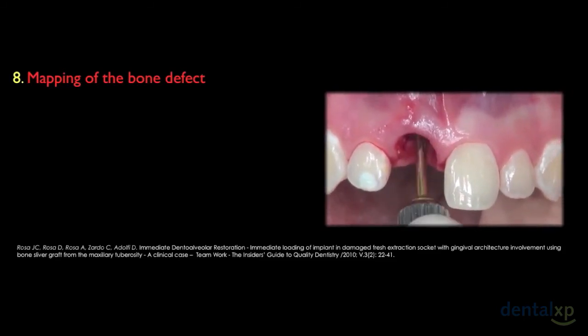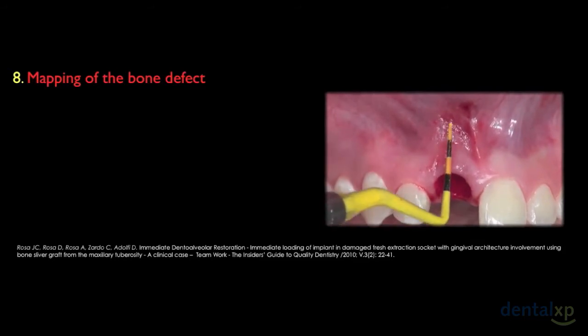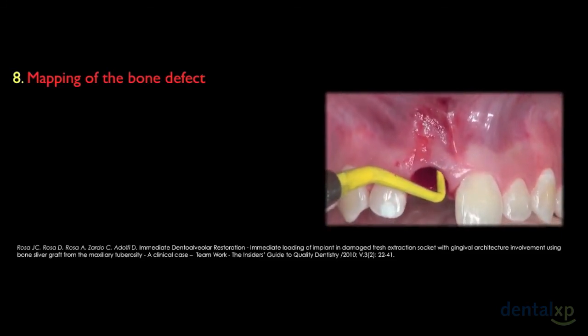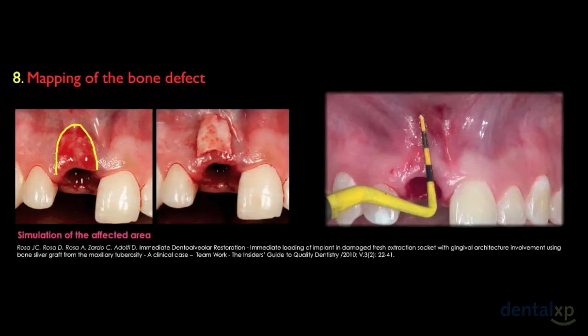Before we start bone reconstruction, we must insert the cover screw over the implant to avoid any residual bone entering the implant. We have to map the defect in the apical-coronal and mesiodistal aspects with a periodontal probe, measuring the defect in height and width. We can do a simulation of the affected area to transfer internal probe values to the external gingival aspect, using the blood clot from the socket — to know the extension of the bone graft and the shape of the bone defect under the soft tissue. Here we have the final graft dimensions according to the shape of the defect.